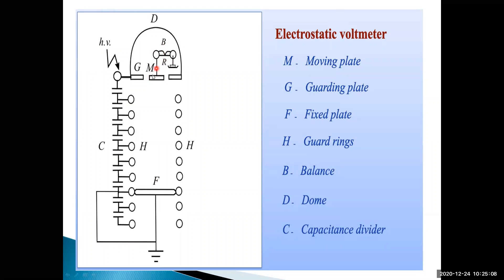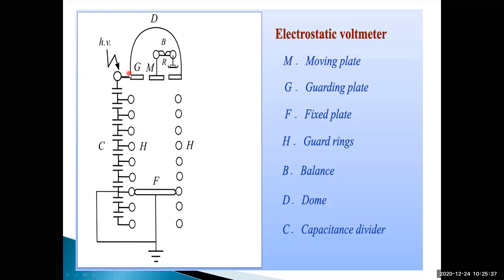D is called the dome. By using this dome, we protect the system from external stray magnetic fields. The effect of stray magnetic fields can be reduced by using the dome - external stray magnetic fields are reduced because the system is enclosed within the dome. Because of the moving plate moving between the two plates, there will be external effects, so to avoid stray magnetic fields it is enclosed in the dome.